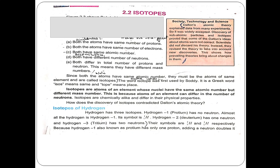For example, one element is carbon. Carbon has three isotopes: carbon-12, carbon-13, and carbon-14. When the number of neutrons is different, it means that the mass number is different.